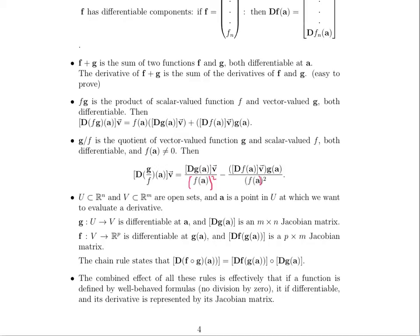Note that if we have two open sets, U is in R^n, V is in R^m, and a is a point in U at which we want to evaluate a derivative, G is the function that maps from U to V, F is the function that maps from V to R^p. Note that if G is differentiable at a and dG of a would be an m by n Jacobian matrix and F is differentiable at G of a and dF of G of a is a p by m Jacobian matrix, then the chain rule, which everyone knows and loves so much,